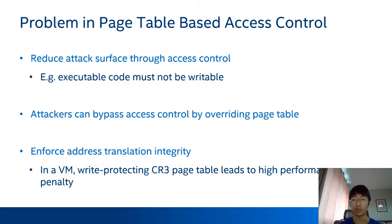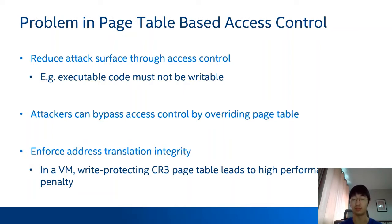Currently, access control is widely used in the Linux kernel to reduce attack surface. For example, Linux kernel marks executable code non-writable in the page table and marks data non-executable in the page table. In general, page table-based access control is efficient. But in theory, if an attacker can write to arbitrary memory by exploiting some kernel vulnerabilities, they could override the page table and bypass access control enforced by the page table. So to defend against attacks that override the page table, we need to enforce address translation integrity.